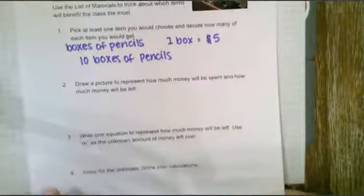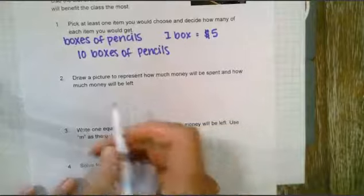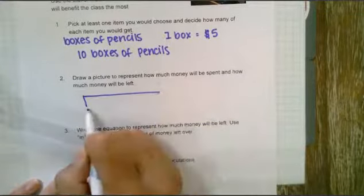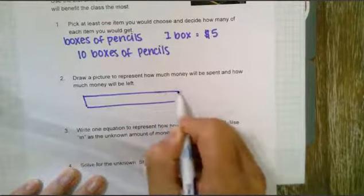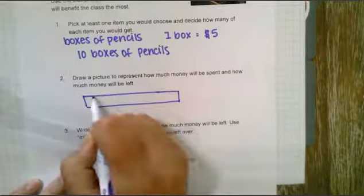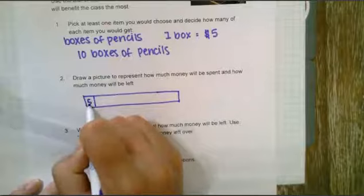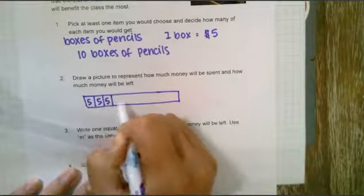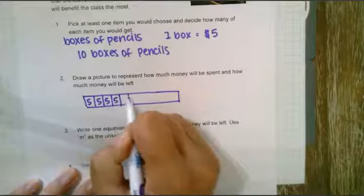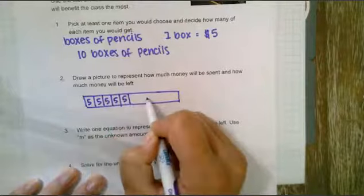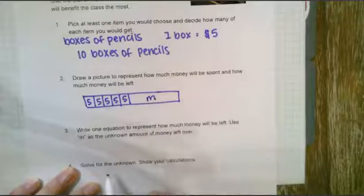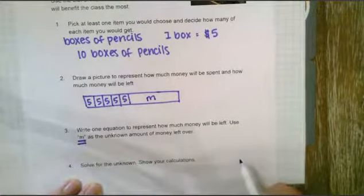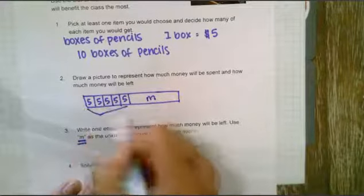Here's the picture I'm going to use. I'm going to use a tape diagram to represent how much money will be spent and how much money will be left. So here's one box of pencils and it's five dollars, two, three, four, five, and then here is just the money left over. Remember I'm going to use the letter m for the money left over.